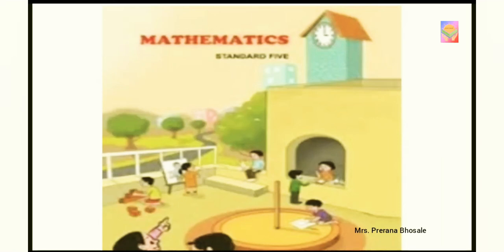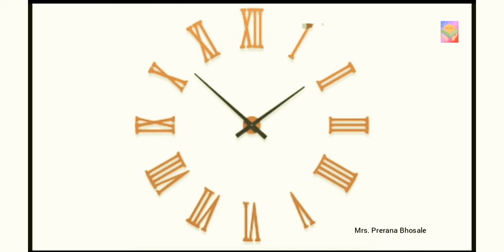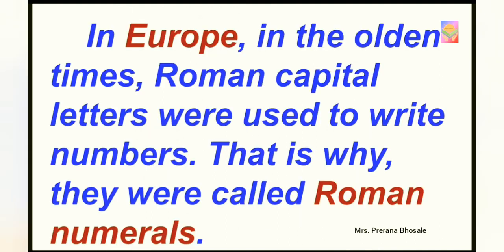Last year in 4th standard you have already learned about Devanagari numeral and international numeral. Now let's learn something new. Look at this clock. This clock does not have numbers. Can you guess what these symbols are called? Yes, they are Roman numerals. In Europe, in the olden times, Roman capital letters were used to write numbers. That is why they were called Roman numerals.